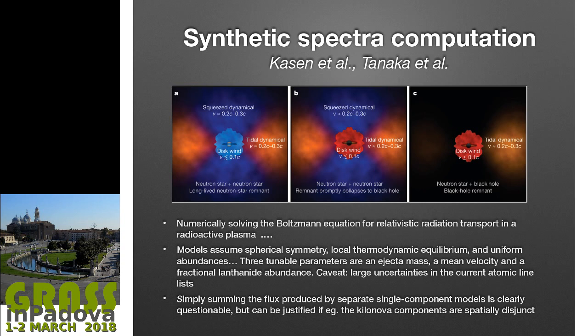The situation is actually very complex. The model predicts different regions with different composition, expansion velocity, and direction. Depending on how long it takes the proto-neutron star to collapse to a black hole, you will observe different things. The current models assume spherical symmetry, local thermodynamical equilibrium, and uniform abundances—none of which are expected here. Adding to that, there is huge uncertainty in the current atomic line list for lanthanide elements, so it is almost a miracle that the observed spectrum fits the model at all.